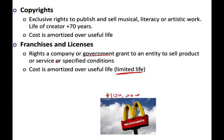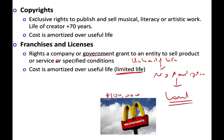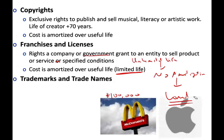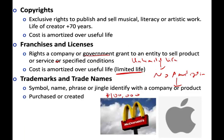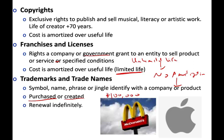Some intangibles have unlimited life — once you buy them, you can use them forever, so there is no amortization. This is the same concept as land. Trademarks and trade names — think of the Coca-Cola sign or the Apple sign — are symbols, names, phrases, or jingles that identify a company or product. They could be purchased or created. If purchased, you record the cost; if created, you can only capitalize the filing fee. These intangibles are renewed indefinitely, meaning they have unlimited life.